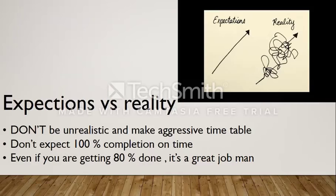Suppose you have made the timetable. You have expectations that you will achieve these things on time, but in reality it doesn't always follow a straight curve. You don't always achieve 100% of your targets on time. So while making a timetable, don't be unrealistic and make an aggressive timetable. Don't plan so much that it's not practical. Even if you are getting 80% of tasks done, that's a great job — you should reward yourself and be happy.